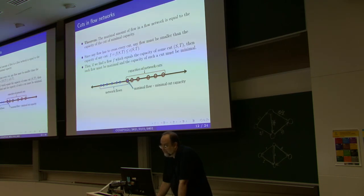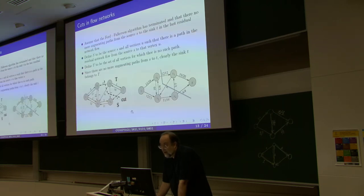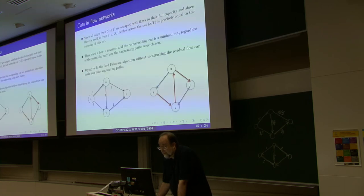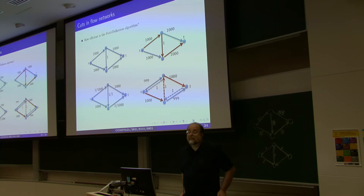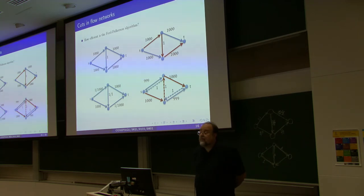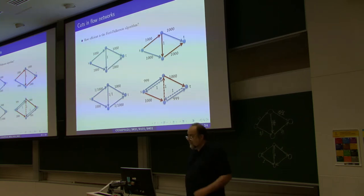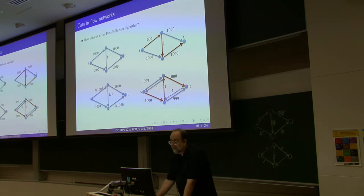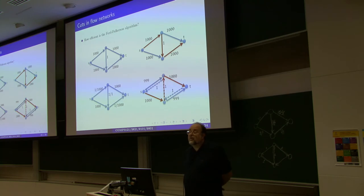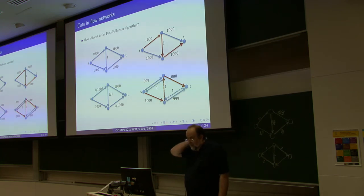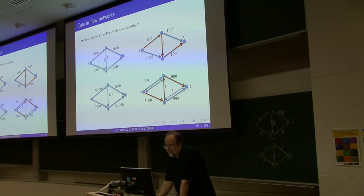Ford-Fulkerson, regardless of how you add augmenting paths, will eventually converge to the max flow. But the choice of augmenting paths can greatly change the runtime. In fact, Ford-Fulkerson doesn't have to terminate in polynomially many steps — say N-squared or N-cubed steps, where N is the number of vertices or edges.